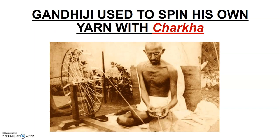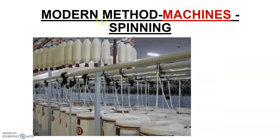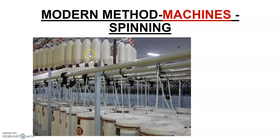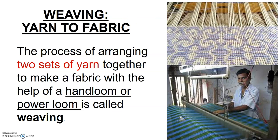The modern method of spinning is done with the help of machines. These days there are many places where machines are used to change fiber into yarn. A pot full of fiber is twisted and turned to form yarn, and the yarn is then put onto rollers.